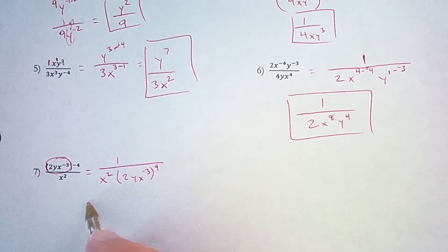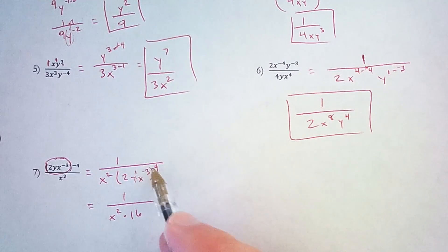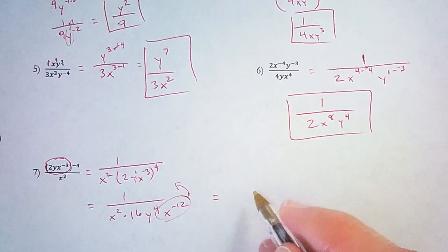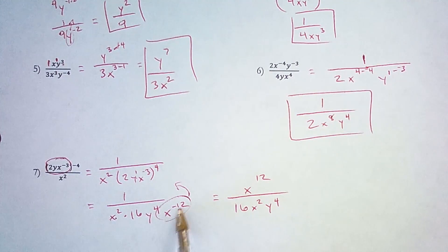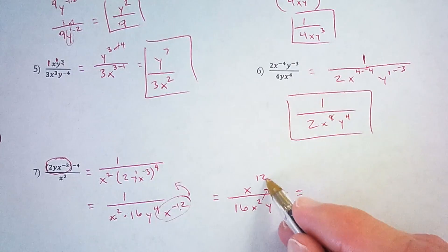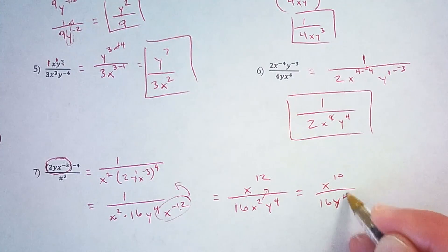Now I can start raising things to the 4th power. So that's 1 over x squared times 2 to the 4th power — that's 2 times 2 times 2 times 2, which is 16. y to the 1st power times 4 is y to the 4th power. And x to the negative 3rd to the 4th — negative 3 times 4 is negative 12. Now I need to take this and move it to the numerator to have a positive power, so that's x to the 12th power over 16x squared y to the 4th. I could have combined these already, but I'll move this up by subtracting — 12 minus 2 is 10 — so that's x to the 10th over 16y to the 4th power.